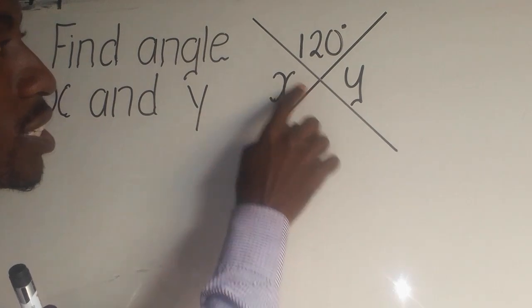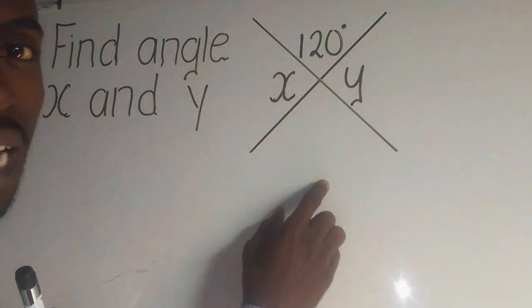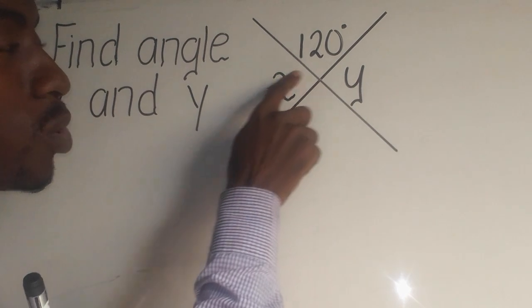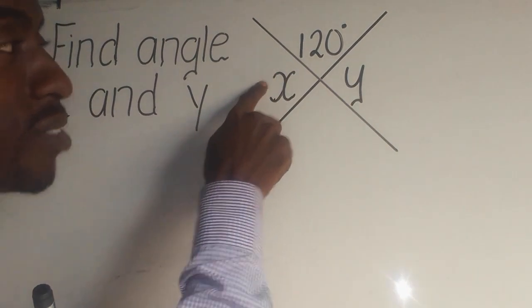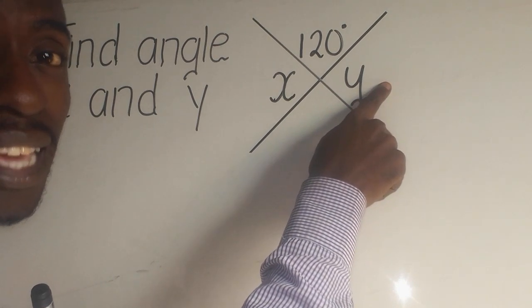For example, as you can see that these two lines have crossed each other. That simply means that the angle x is also equal to angle y. Meaning, if here there is 45, even there there will be 45.